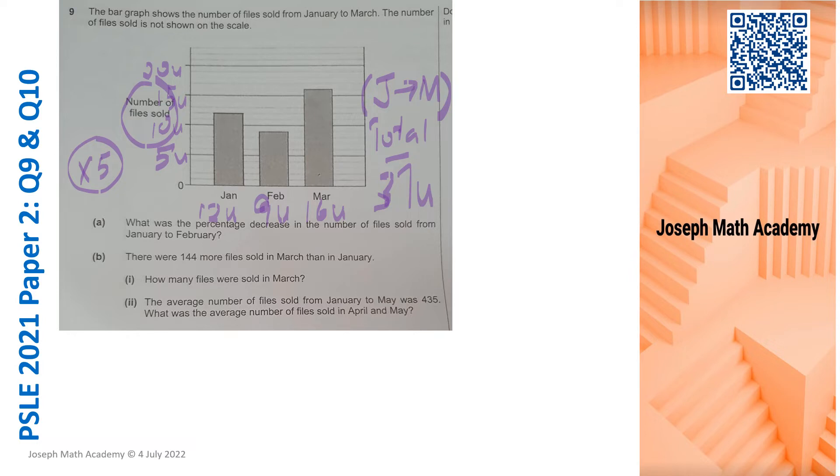Let's move on to part A. January, you have 12 units sold. February, 9 units only. So there's a reduction of 3 units. The difference, 3 over 12. One quarter is a fraction of course, so that gives us 25%. That means A is completed.